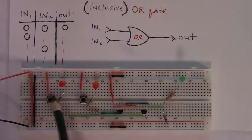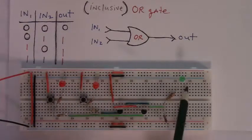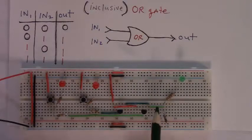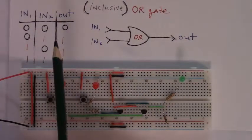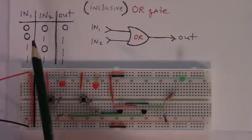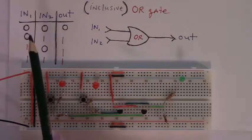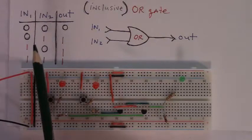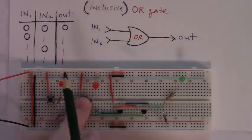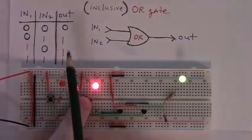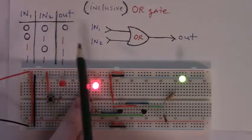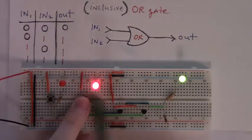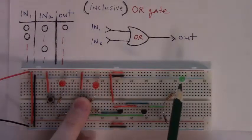Input 1 is low, input 2 is low, and the output is low. Moving to the second row in its table where input 1 is low but input 2 is high — according to the table we should expect the output to be high, and it is.